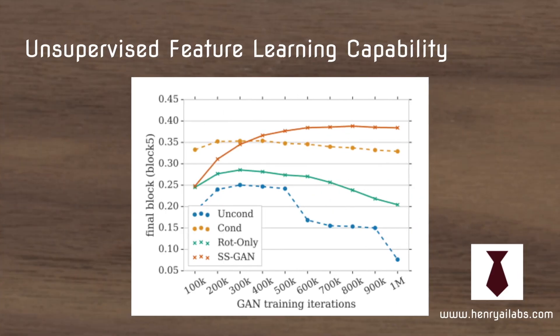A big application for generative adversarial networks used in an unsupervised sense is that you can produce useful features — deep learning is really about representation learning, where you map data into continuous space representations that can be used for linear classifiers. This shows how the self-supervised GAN is able to outperform the unconditional GAN and almost perform as well as the conditional GAN.